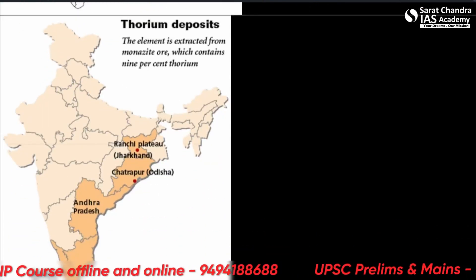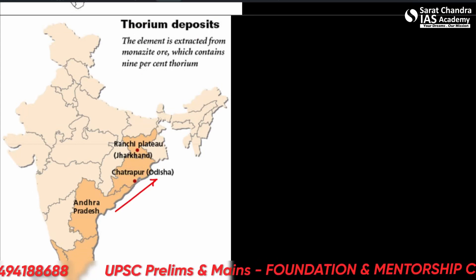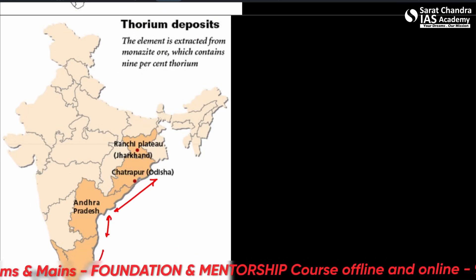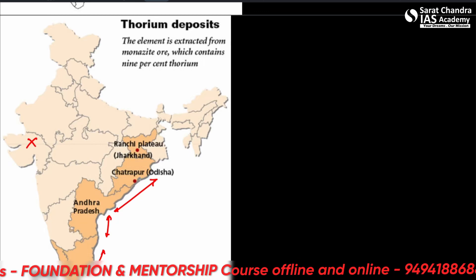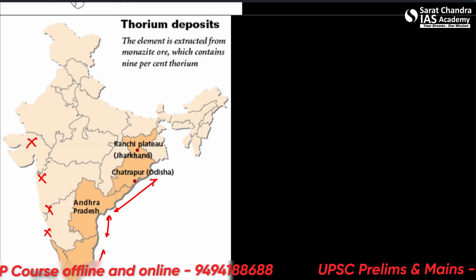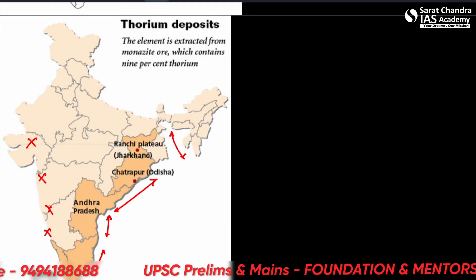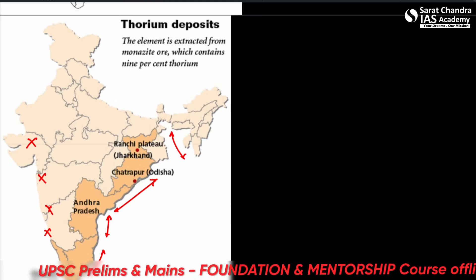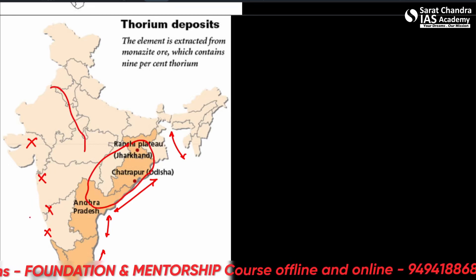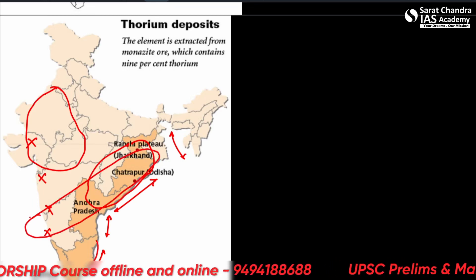Regarding thorium deposits, thorium is found in monazite sand in the coastal areas of eastern India — Odisha, Andhra Pradesh, and Tamil Nadu. Please remember: it is found along the Coromandel coast, not the Malabar coast or western region. It is also found in Jharkhand. For reference, the distribution of aluminum, copper, iron, and titanium were seen in similar regions — titanium distribution was also asked in Prelims 2023.